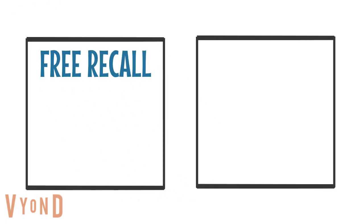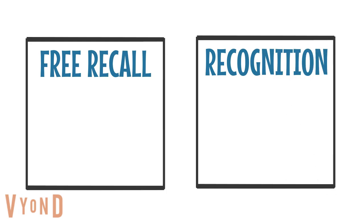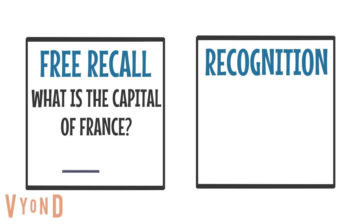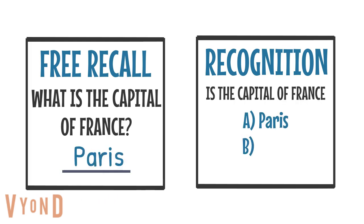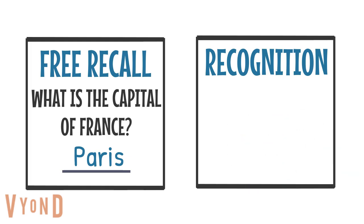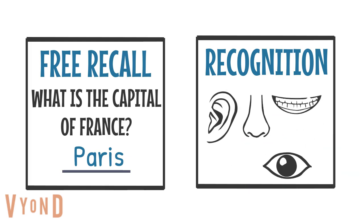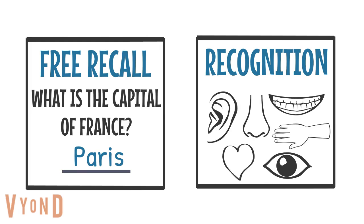So how do we retrieve these memories? Free recall or by recognition. We can think of this like different types of questions in an exam. You could have a fill-in-the-blank question like 'what is the capital of France?' and you could use free recall to remember Paris, or you could have a multiple choice question and recognize the answer as Paris. We can also use our senses for recognition, because they are all interconnected — a smell or a song that we recognize can retrieve the whole event and all the other senses associated with it.